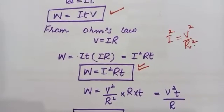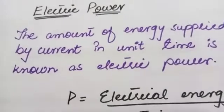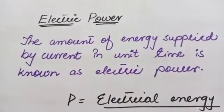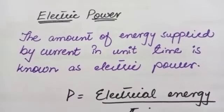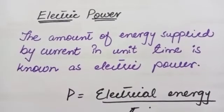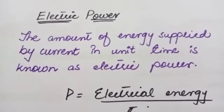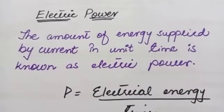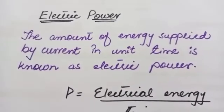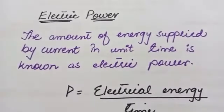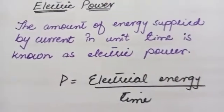The next topic is electric power. In general, power is work done divided by time. It is the ratio of work done to time. If two different persons have different capabilities of doing work, their time of completing that work will be different.